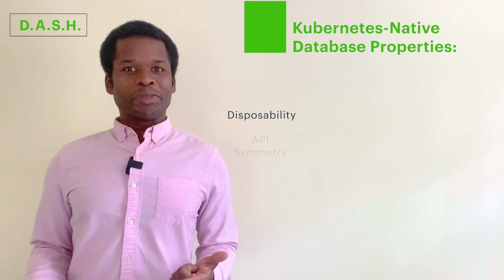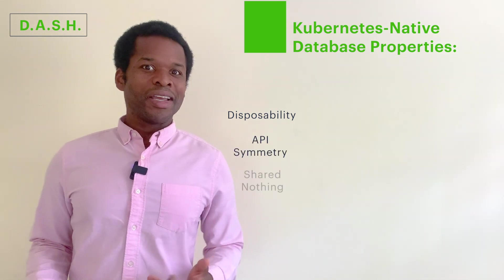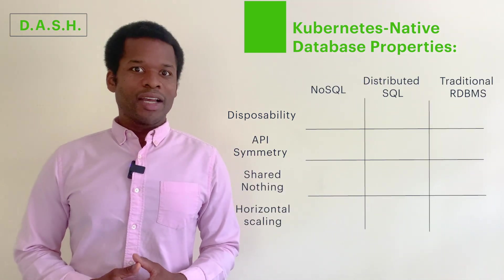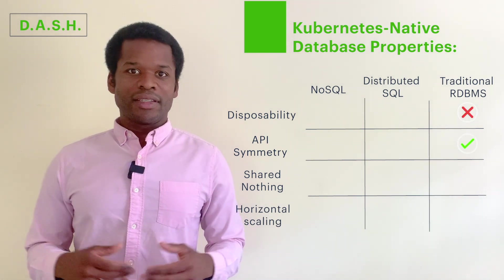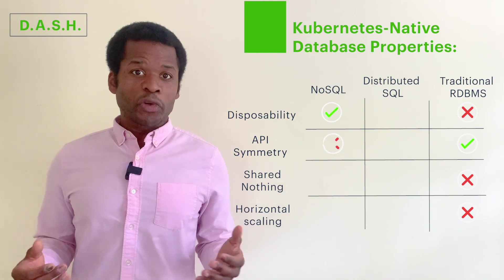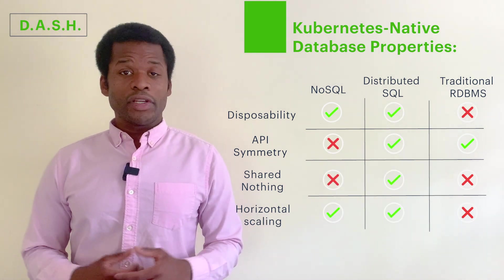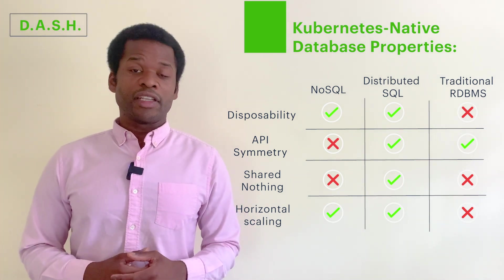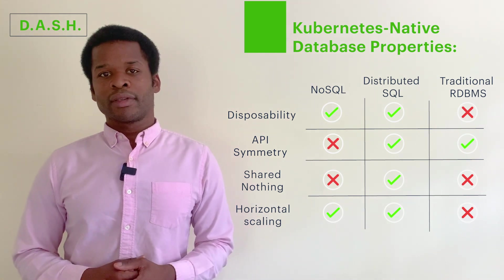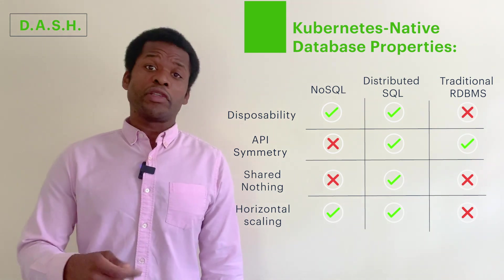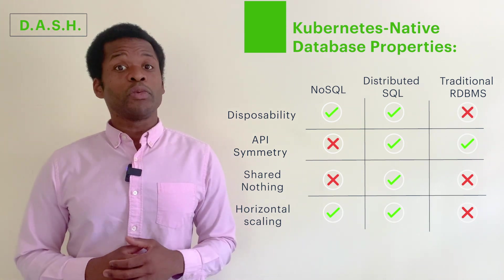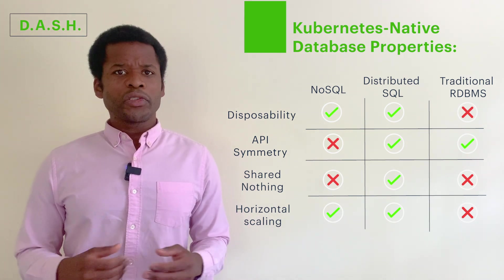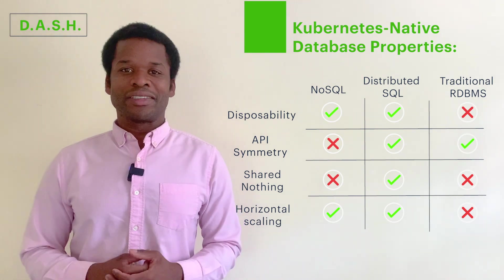Let's recap the four properties of Kubernetes-native databases: disposability, API symmetry, shared nothing, and horizontal scaling. For some time, the databases we've depended on that didn't have all these properties were forced to be relegated outside of Kubernetes. But now, distributed SQL databases like CockroachDB, which have all these properties, can thrive being orchestrated with Kubernetes. I encourage you to check out our documentation on how to orchestrate CockroachDB with Kubernetes, and also our blog posts on this topic. Thank you for listening.